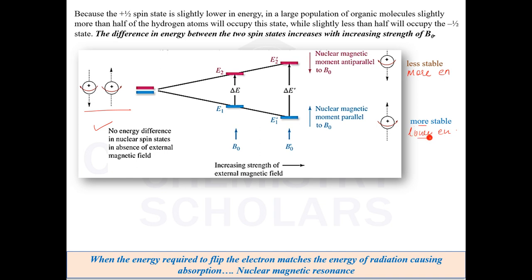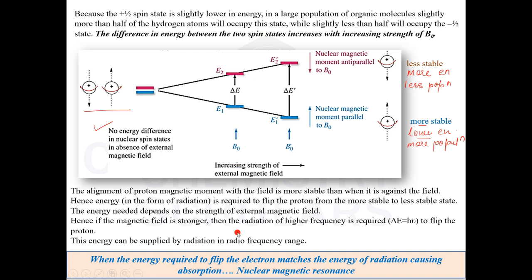Because the lower energy state is more stable, it has comparatively more population — say 60% versus 40%, or 70% versus 30% as a hypothetical example. The more stable states are in more proportion. The difference in the energy of the two spins increases as you increase the magnetic field strength. Going from plus 1/2 to minus 1/2 is called spin flip. To cause this flipping you need to provide energy.